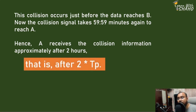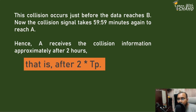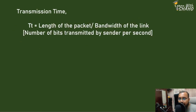So the total time is 2 × TP, where TP is the propagation time. The transmission time TT must be equal to or greater than 2 × TP. Transmission delay is calculated as the length of the packet divided by the bandwidth of the link.